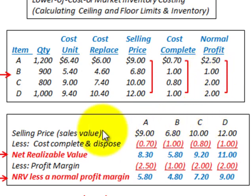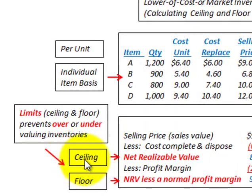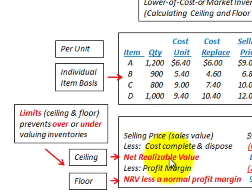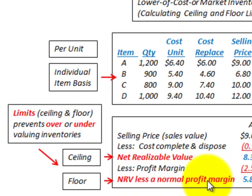The first thing we have to do is calculate our ceiling and floor limits. These ceiling and floor limits prevent over- or undervaluing our inventories. The ceiling limit represents the net realizable value of these inventories, and the floor represents the net realizable value less any normal profit margin.